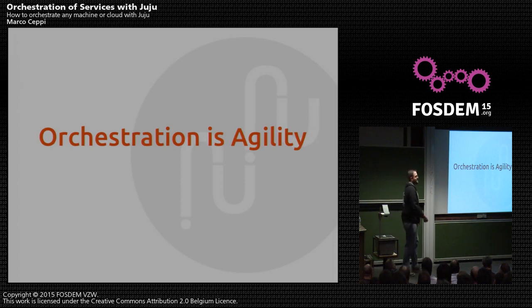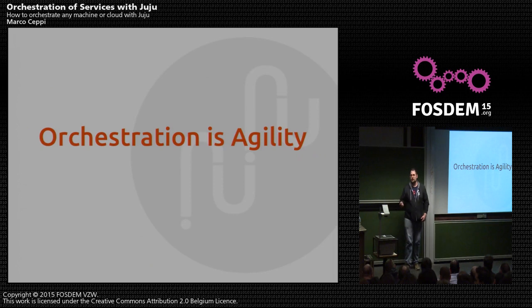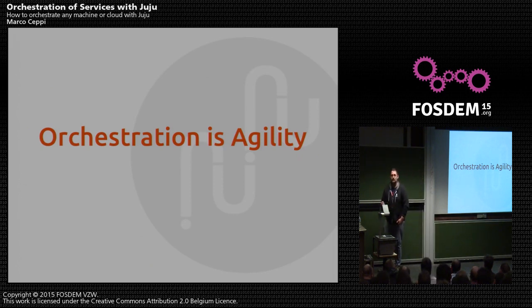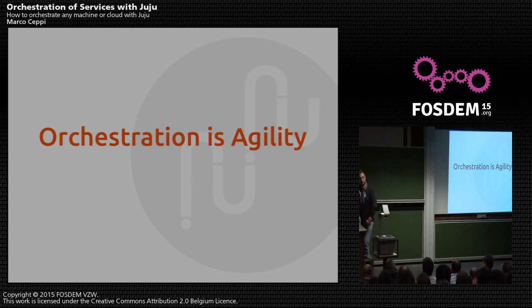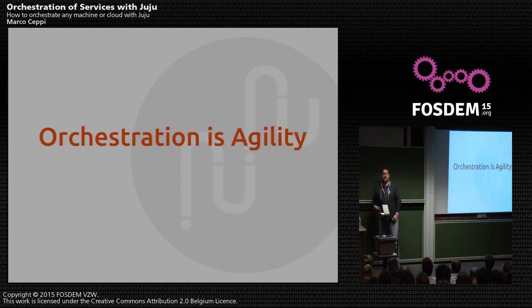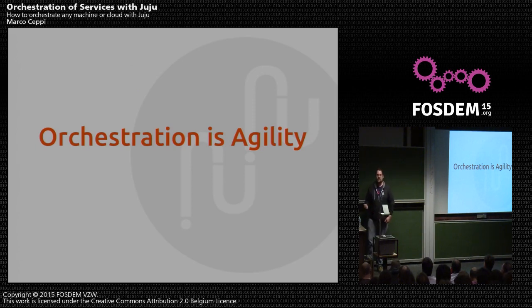Juju is the underlying engine that empowers Ubuntu to deploy OpenStack. You might have seen our Autopilot service where Mark will bring somebody on stage, pick the services you want, click start, and you have OpenStack. It's a very complex deployment — if you're doing it by hand, it can take you a couple days to a couple weeks to understand what services need to be configured and how they fit together. It really is an operating system for the web.